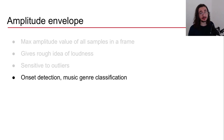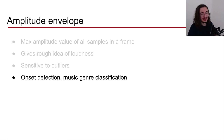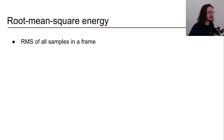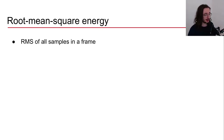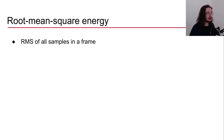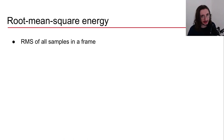In the next video, we'll compare amplitude envelopes from pieces of music from different genres to see if there's a meaningful difference. But now let's move on to the second time domain audio feature: root mean square energy. What we do here is take the root mean square of all the samples in a frame.